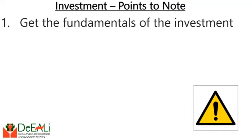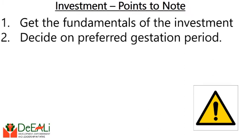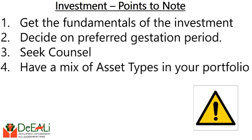In summary, what we are saying is: one, ensure you understand the fundamentals of any investment before you get into it. Two, you must make up your mind whether you are playing for the short run or for the long run, because different investments have different gestation periods. Three, seek counsel — don't rely on native intelligence, ask questions. Four, be deliberate to have a mix of asset types in your portfolio. You should have some that are long-term, some that are mid-term, and some that are here and now. When I say here and now, I mean you should have a portion of your investment in cash — that is why cash is king.